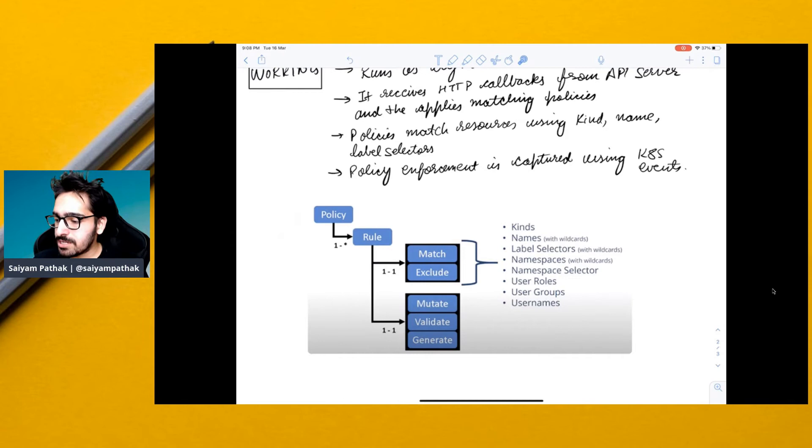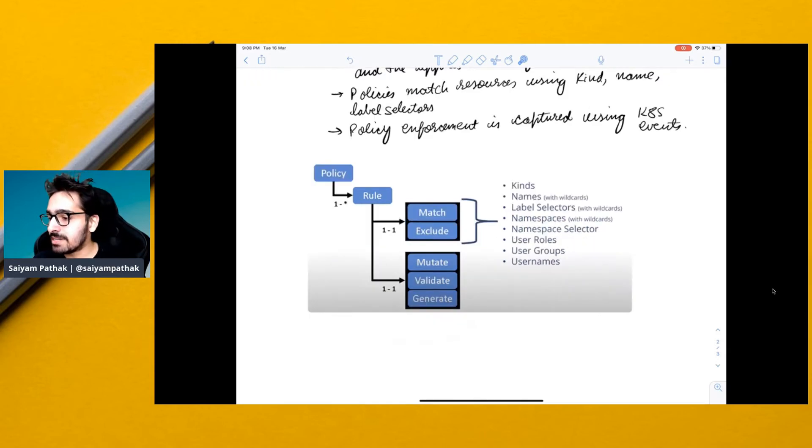And this is how typical policy looks like. So in a policy, you will be having a rule. So first it will match and exclude. So it will match the resources to which the policies will be applied or exclude the resources using namespace, selectors, user groups. And once the resources are selected, you can mutate, validate and generate based on the policy that you have written.